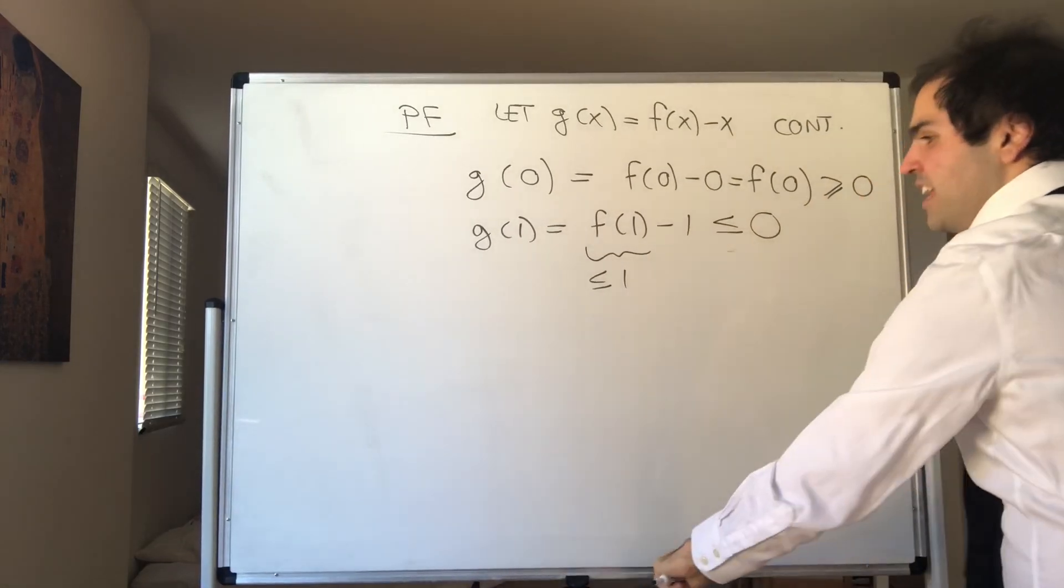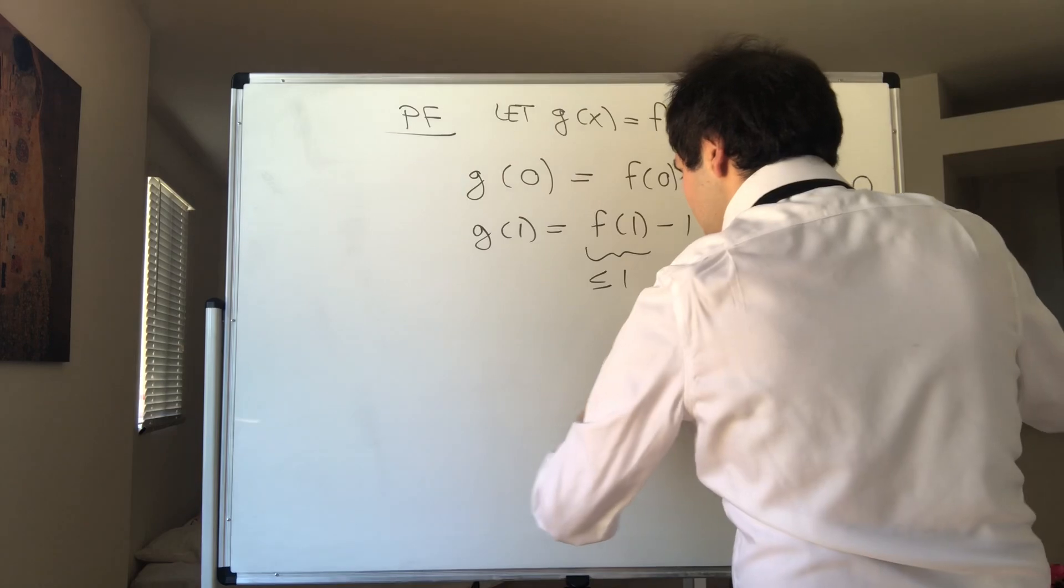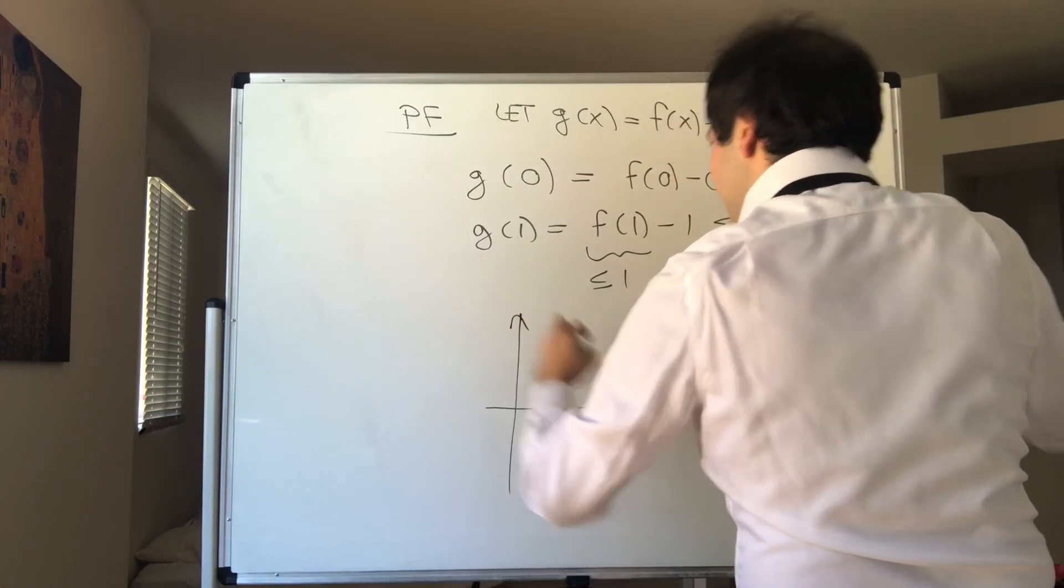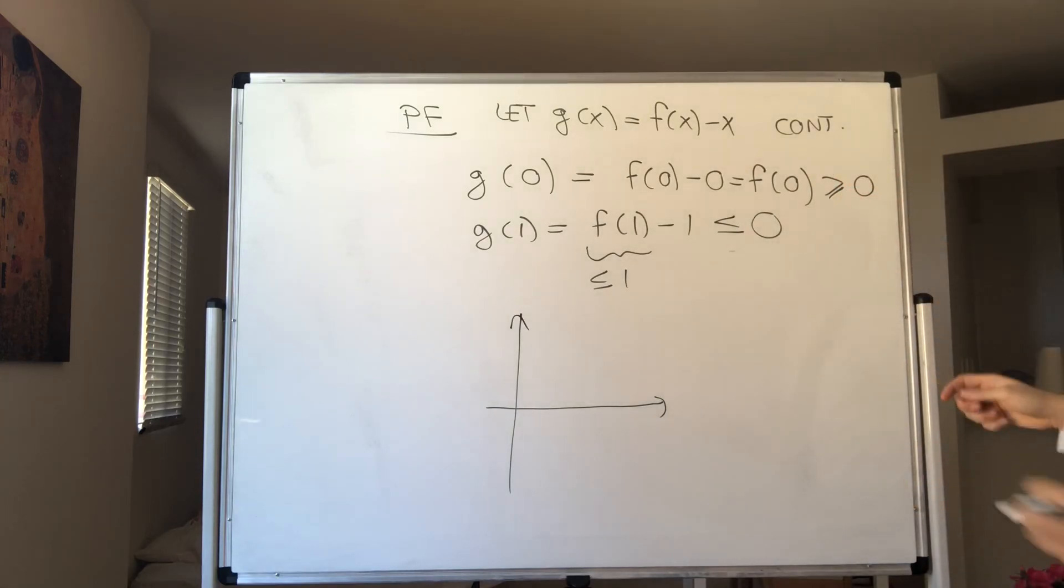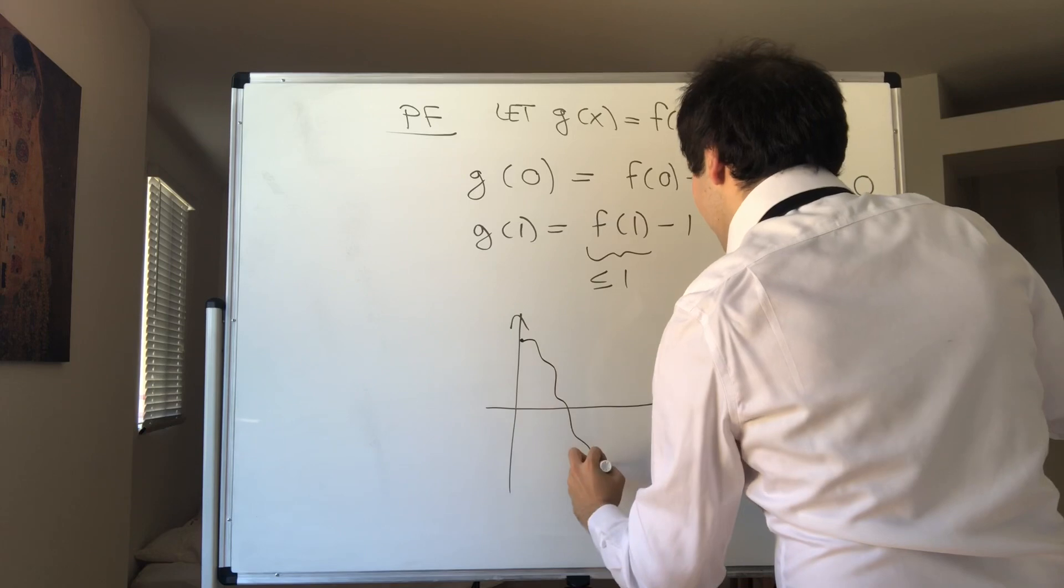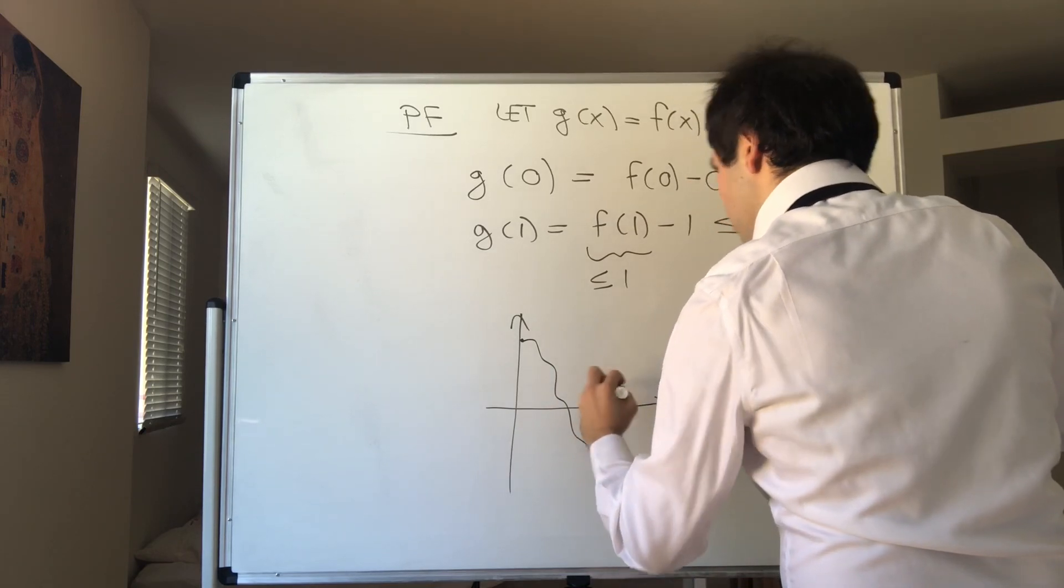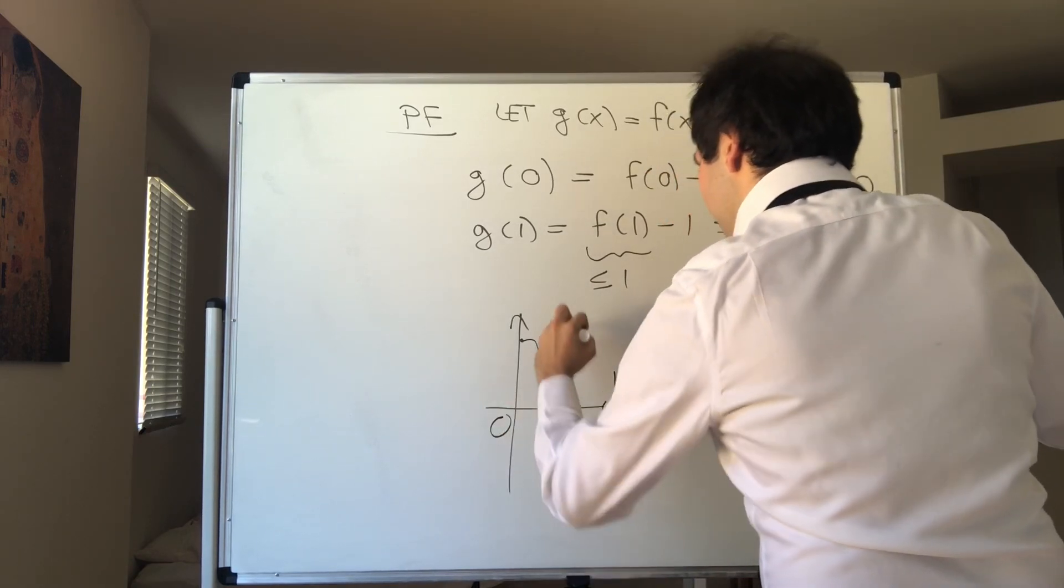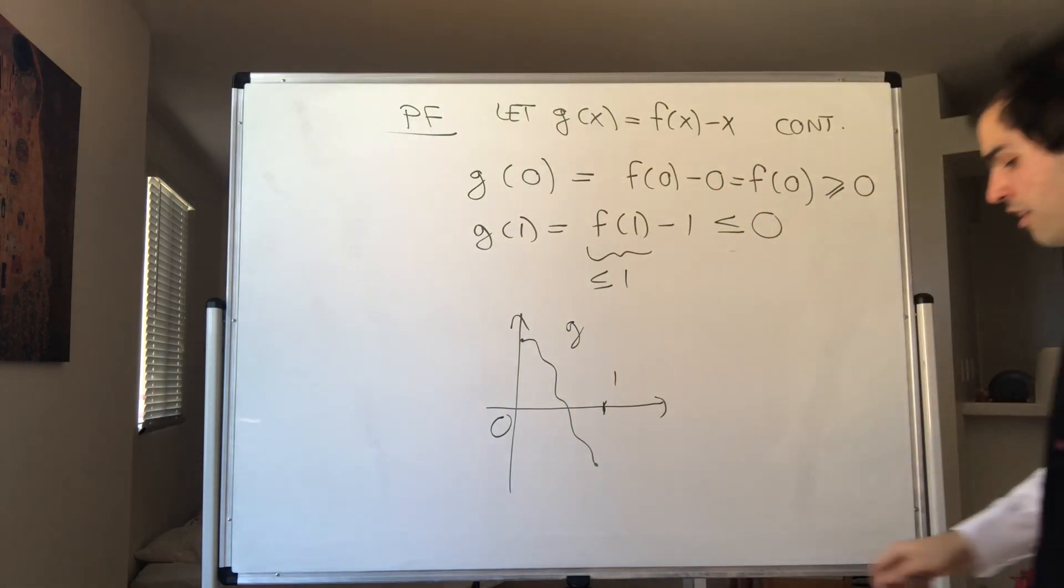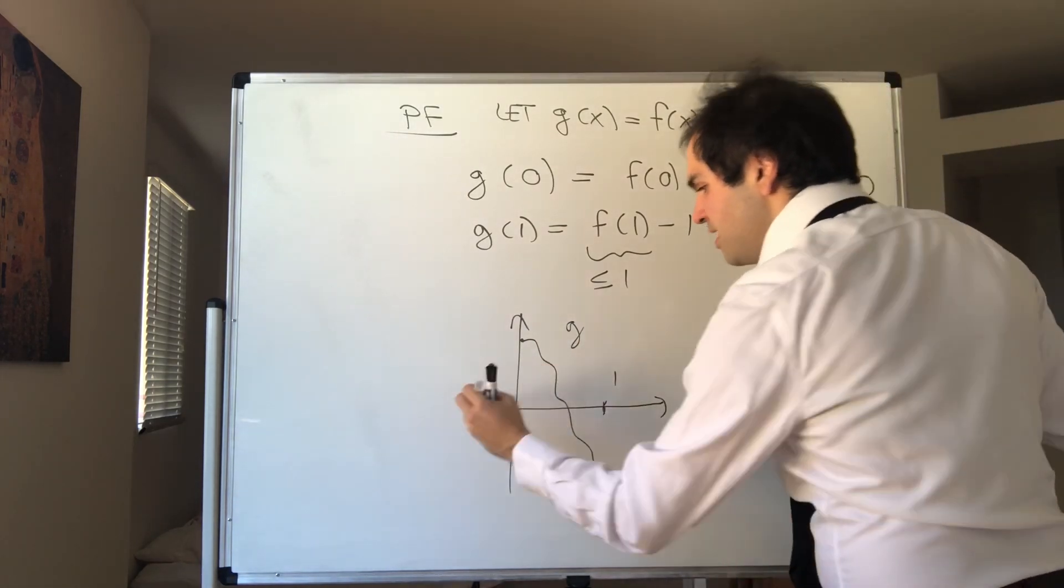So what is happening? We have this function g that goes from a positive value, if you'd like, to a negative value. So this is 1 and this is at 0. And in particular, notice, by the intermediate value theorem with, let's say, c equals 0.